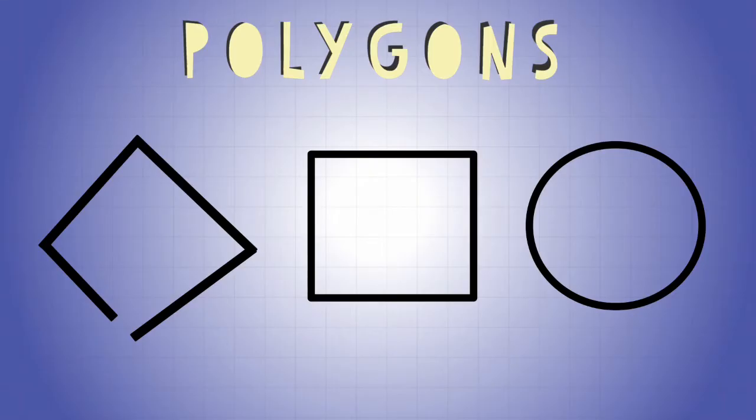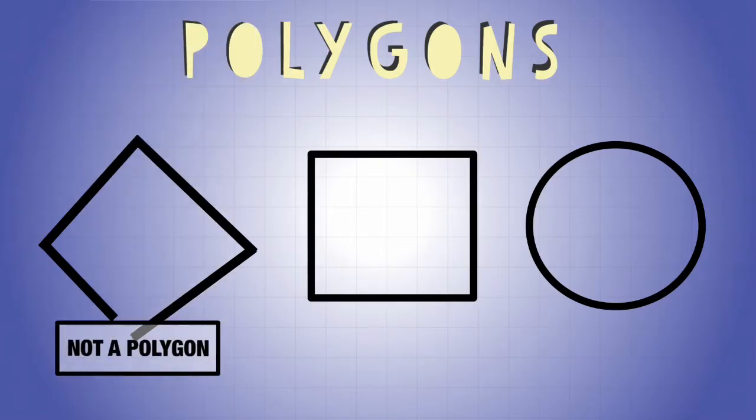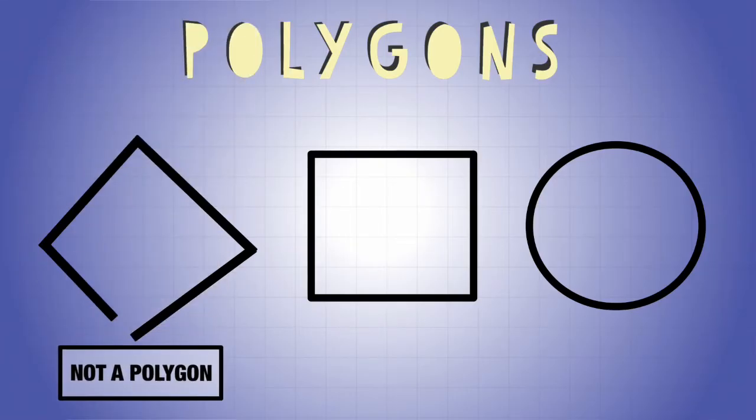Okay, what is a polygon? Now I have three shapes on here, but only one of them is a polygon. Let's look at this first one right here. Okay, this one is not a polygon. It's not a polygon because...